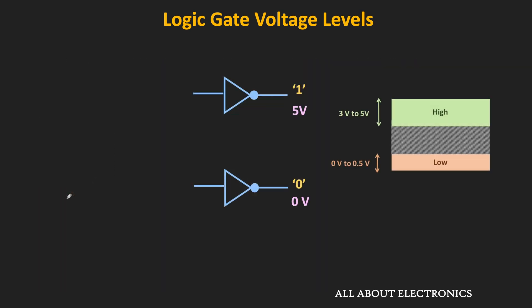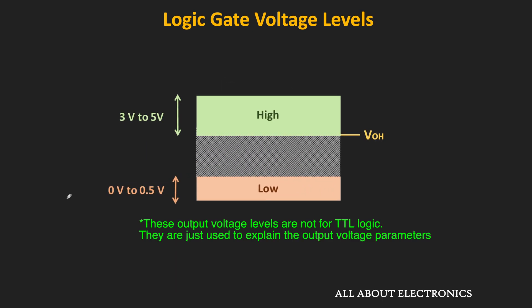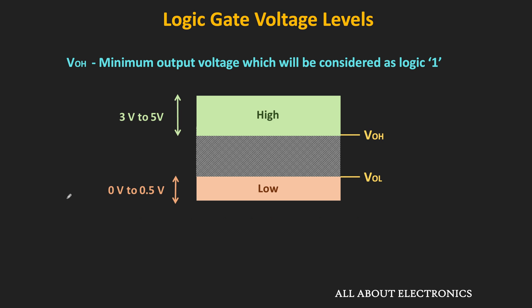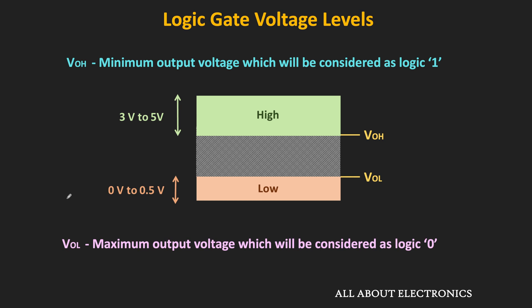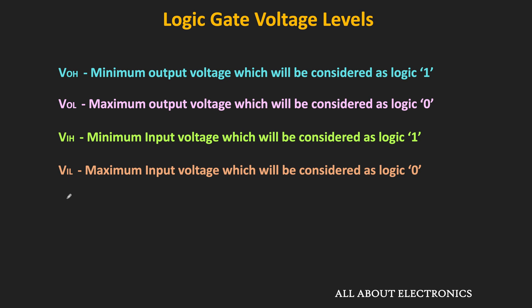Similarly, for the output side also, we will have two voltage levels: VOH and VOL. VOH defines the minimum output voltage which will be considered as logic 1. So if the output voltage is below this voltage level, then it will not be considered as logic 1. That means the output of the logic gate will be considered as logic 1 when its voltage level is more than VOH. Similarly, VOL is the maximum output voltage which will be considered as logic 0. If the output voltage is more than 0.5V, then it will not be considered as logic 0. So VOH and VOL are the two voltage parameters from the output perspective, and with the help of these four voltage levels, we can easily find the noise margin of any logic gate.